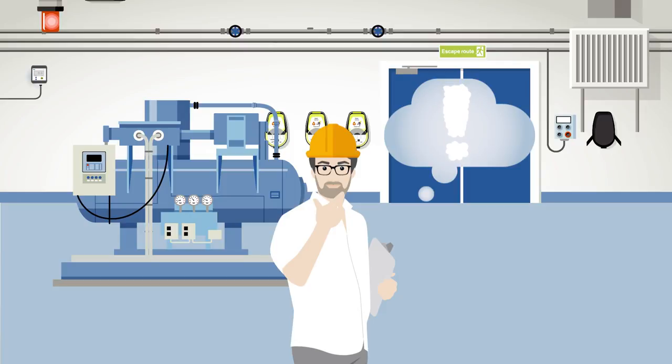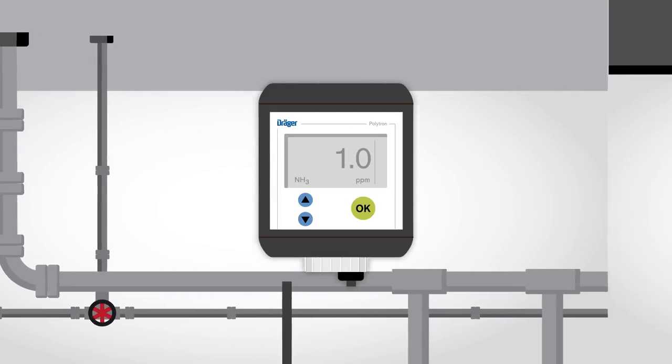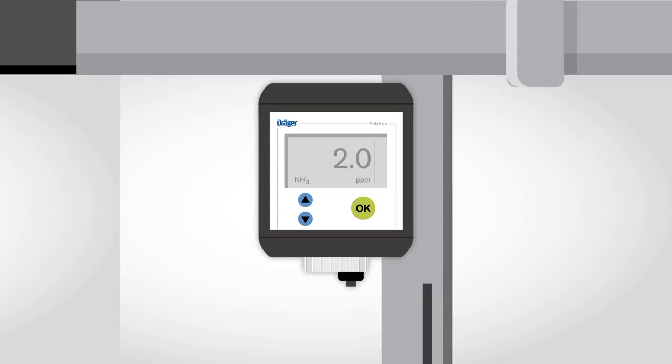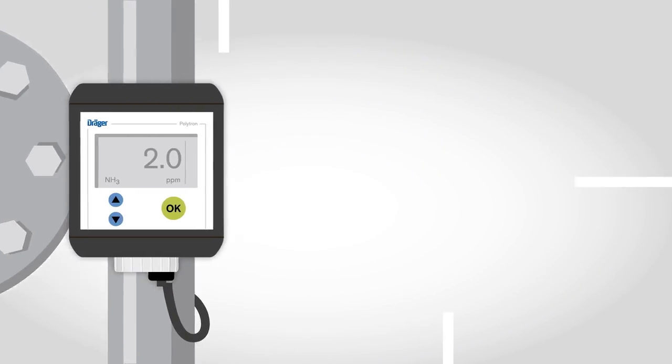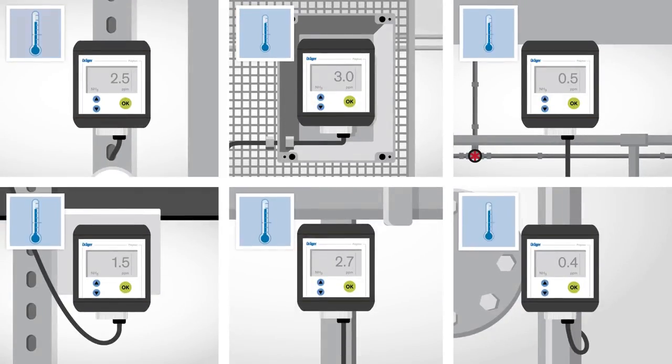Fundamental to the safety of the plant is a stationary gas detection system. For early detection of gas leaks, a number of transmitters are fitted in the compressor room, the valve stations, and also perhaps the cooling chamber.